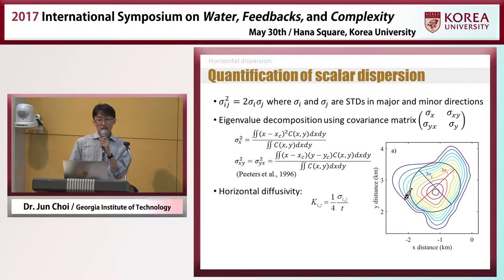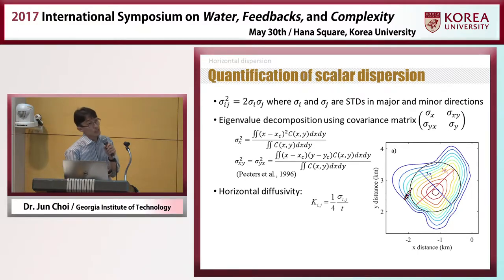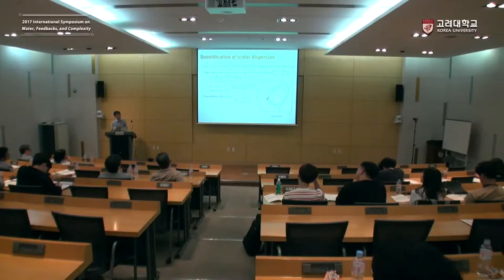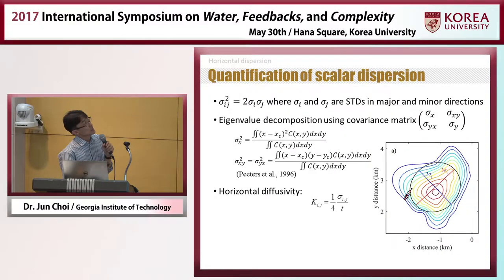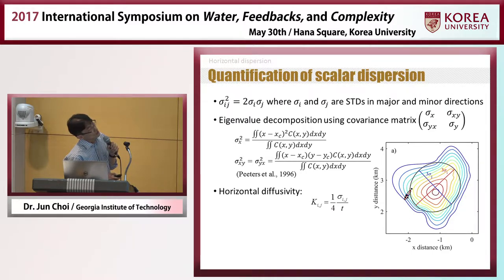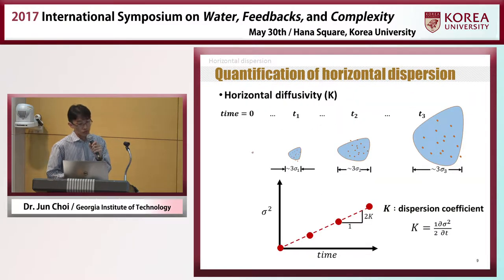The previous slides covered quantification of particle dispersion. This slide addresses quantification of scalar dispersion. The variance sigma-ij squared can be calculated from sigma-i and sigma-j, the standard deviations of concentration in the major and minor directions. These are calculated from eigenvalue decomposition using the covariance matrix, and from those we calculate horizontal diffusivity. This is an example of the standard deviation in major and minor directions shown on a real dye concentration map.